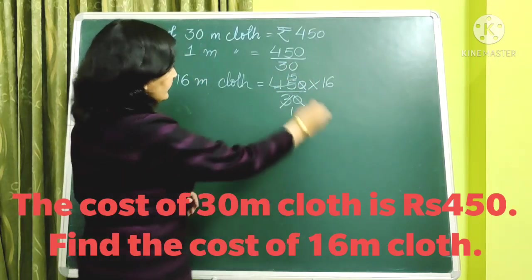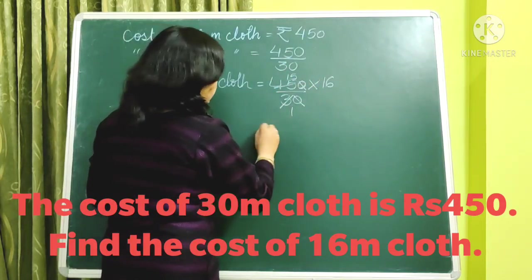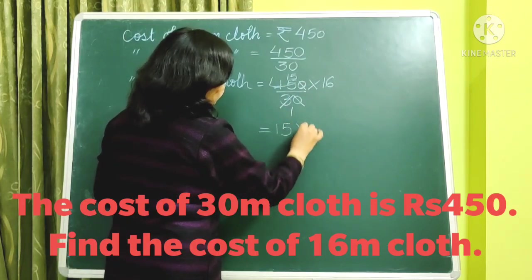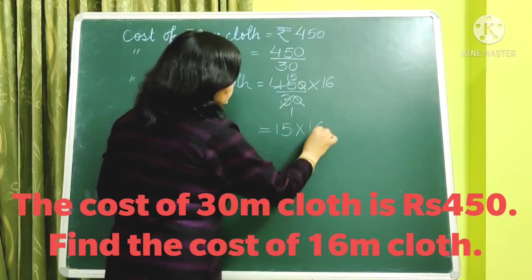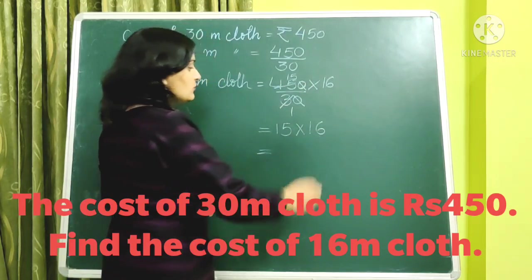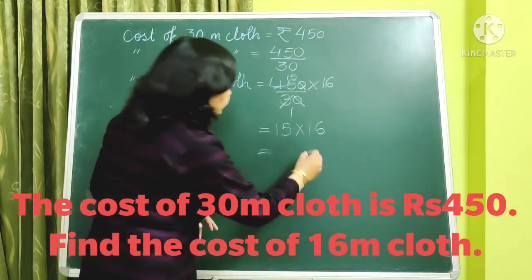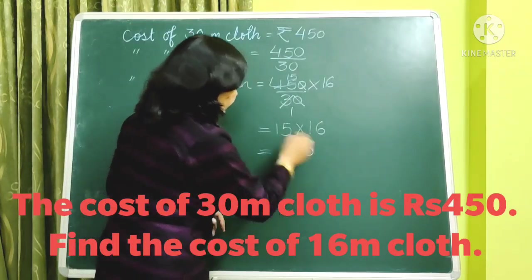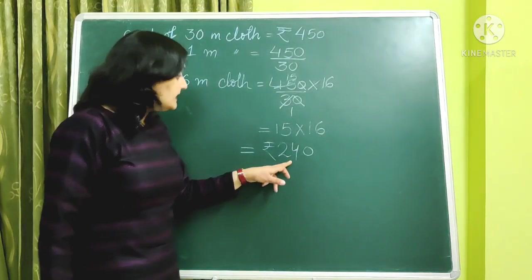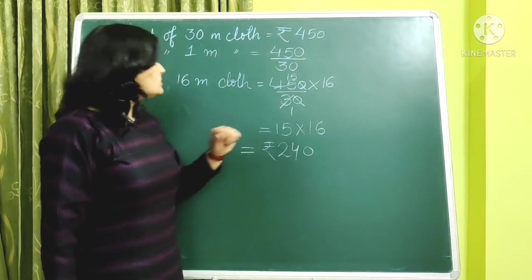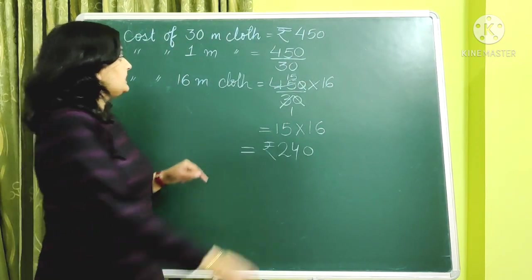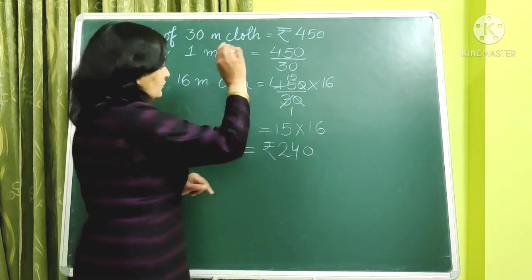So the cost of one metre is rupees 15. Now to find the cost of 16 metres, we multiply 15 by 16, and 240 is the cost of 16 metres of cloth.